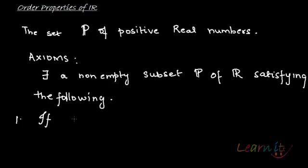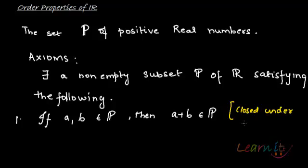Number one: if a and b belong to this set P, then they should be closed under addition, so a plus b should also belong to P. Number two: if a and b belong to P, then they should be closed under multiplication as well...